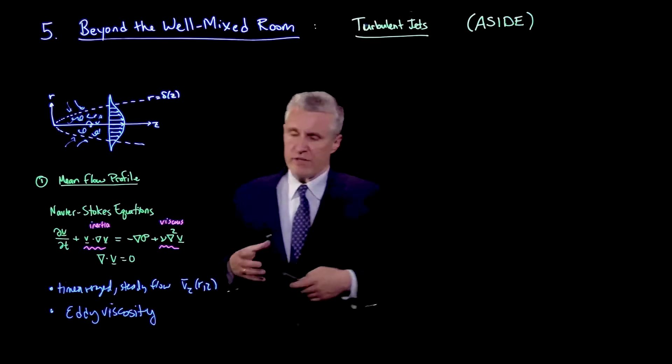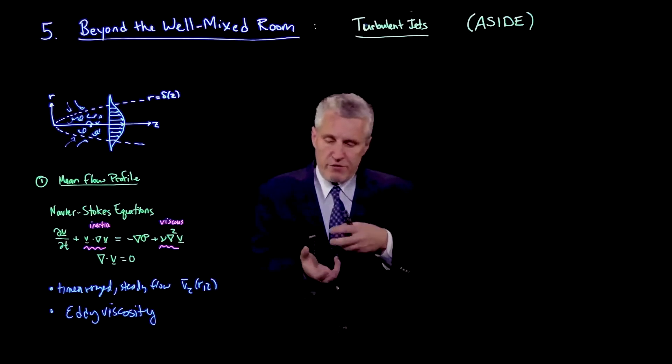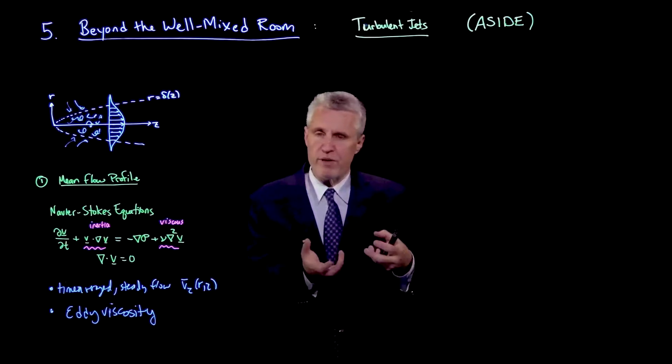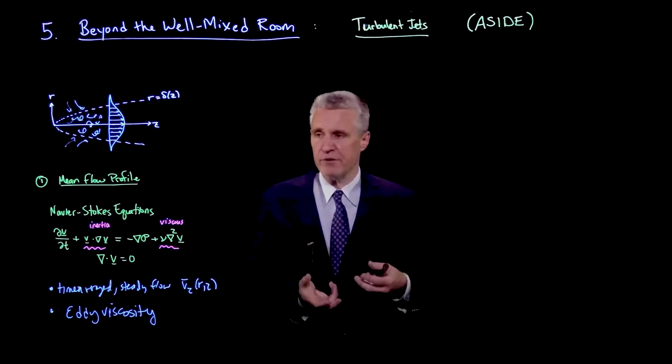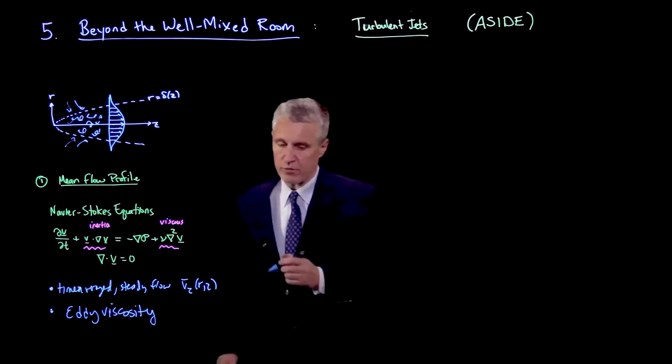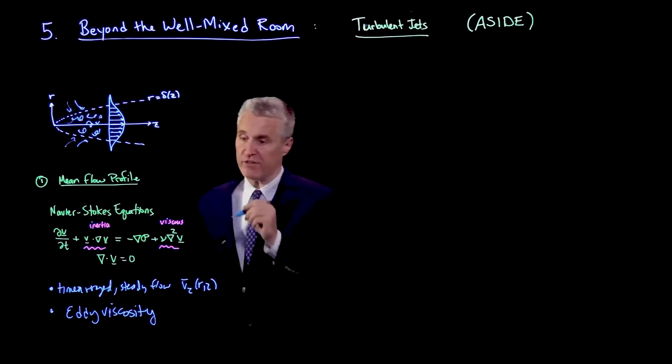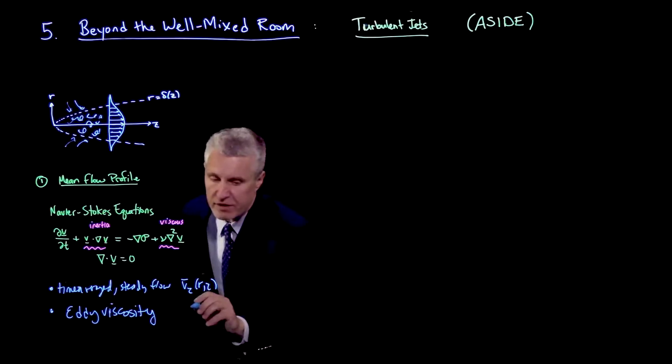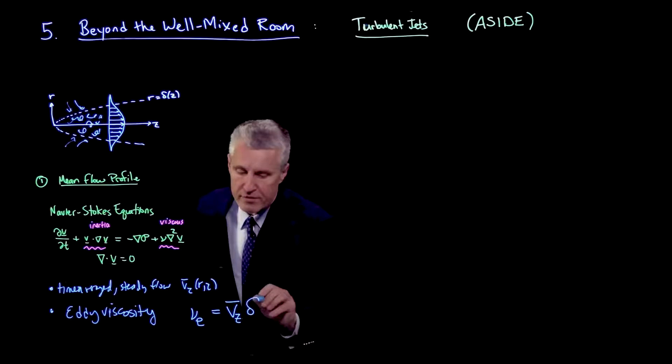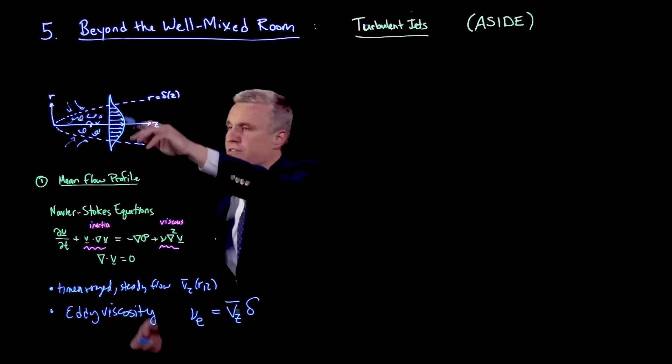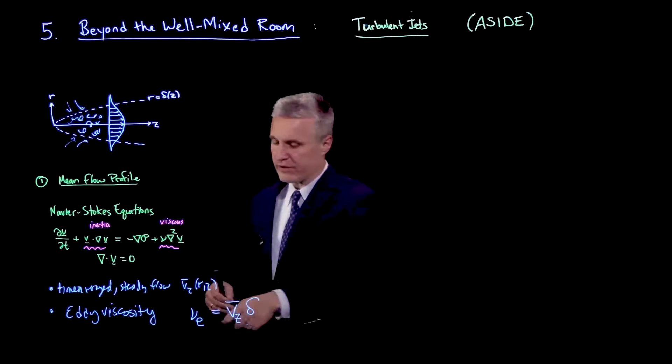So the eddy viscosity basically assumes that diffusion of momentum happens at the scale of the largest eddy in the flow. And so we've talked about the assumption of eddy diffusivity. But for eddy viscosity, what I'll write is the eddy viscosity is a typical velocity, which is vz, times a length scale, which is delta. So what I'm saying here is that if I go out to a certain position z and I ask myself what is the width of the jet at that z.